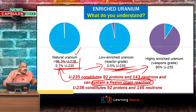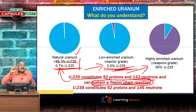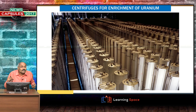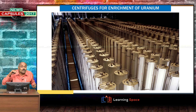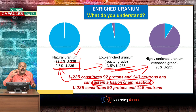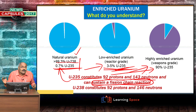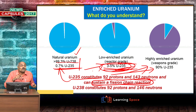This enrichment — increasing the component of U235 — takes place using centrifuges and it is a costly process. There are also international safeguards for enrichment, because if enrichment goes up to 90% then atom bombs can be made. Reactor grade uranium constitutes around 3 to 5% of U235.